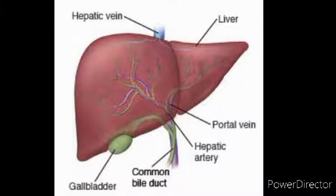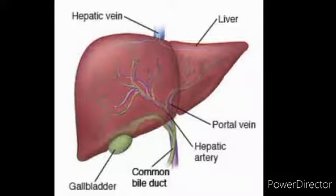Children, this is the diagram of the liver. The color of the liver is reddish brown, as shown here — you have to color the liver in the same way. Below the liver, there is a green structure called the gall bladder. Veins and arteries shown include the portal vein, hepatic vein, hepatic artery, and one duct — the common bile duct.